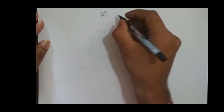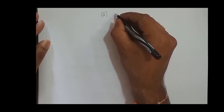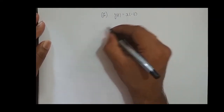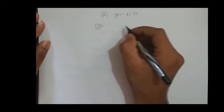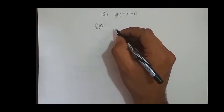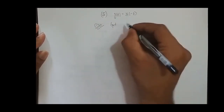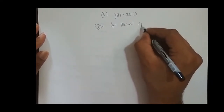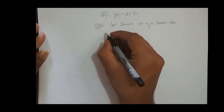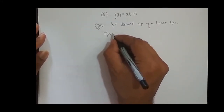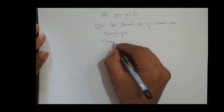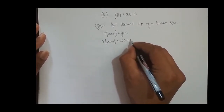We will take up one more problem. This time let the system be y of t equal to x of minus t. Our aim here is to check whether this system holds the linearity property or not. First we will get the desired output of a linear system. We can write this as: transformation of x of t is equal to y of t, which is x of minus t.